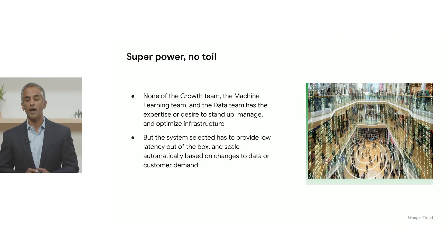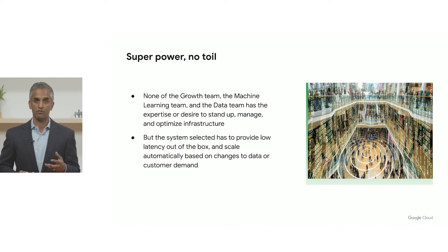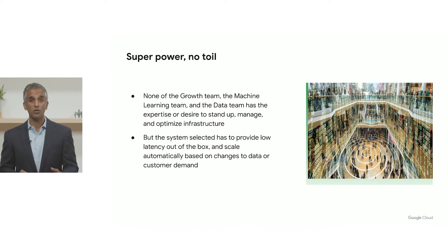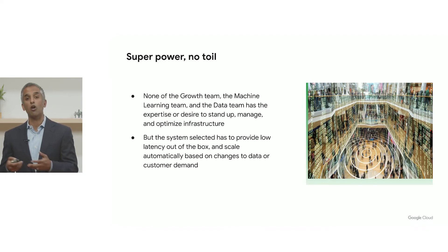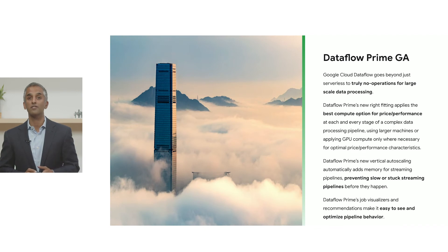What's the last problem we have today? The growth team, the machine learning team, and the data team are experts in their domains, but they're not experts in running infrastructure. They have no desire to stand up, manage, or optimize that infrastructure for the cost benefits they're looking for. But the system they want has to not only perform, but be cost effective — and it should scale automatically based on demand.